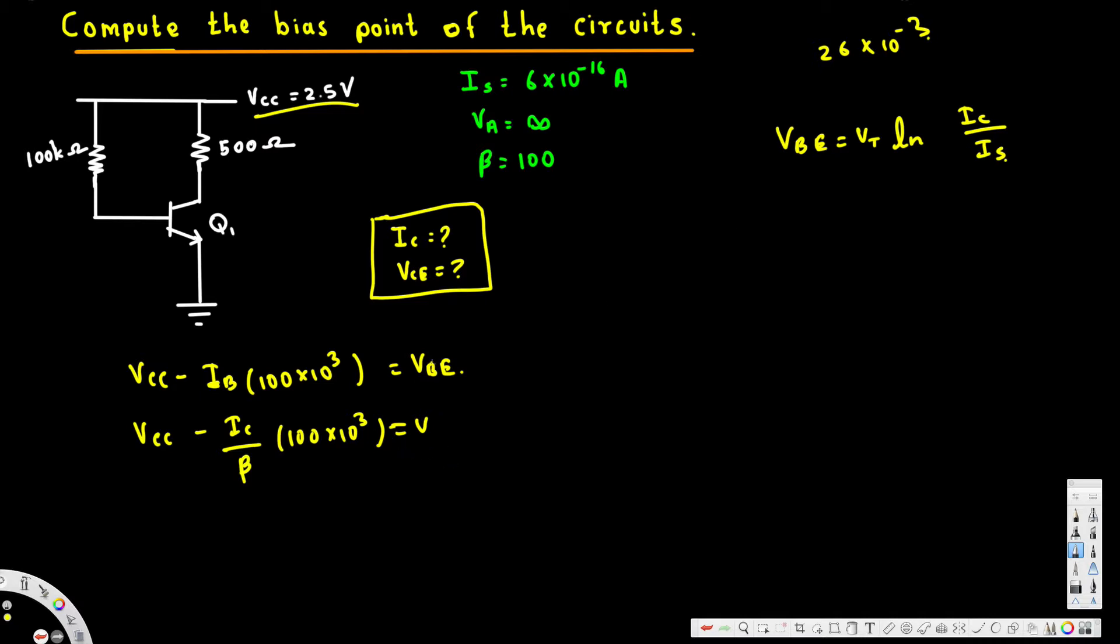So instead of Vbe I plug this Vt ln Ic over Is. Now let's go ahead and plug the values.